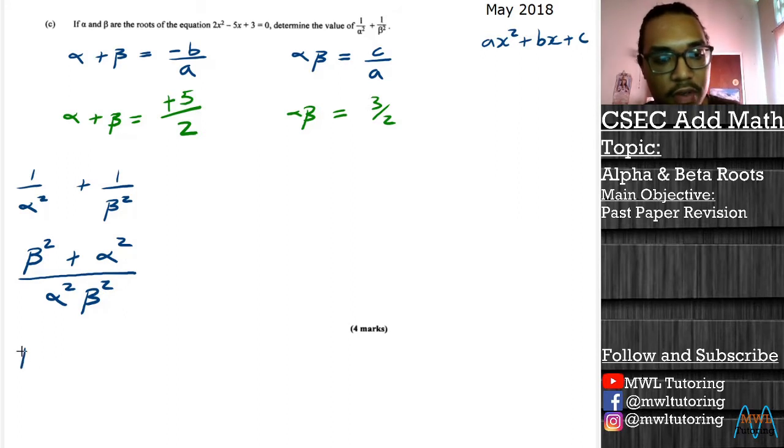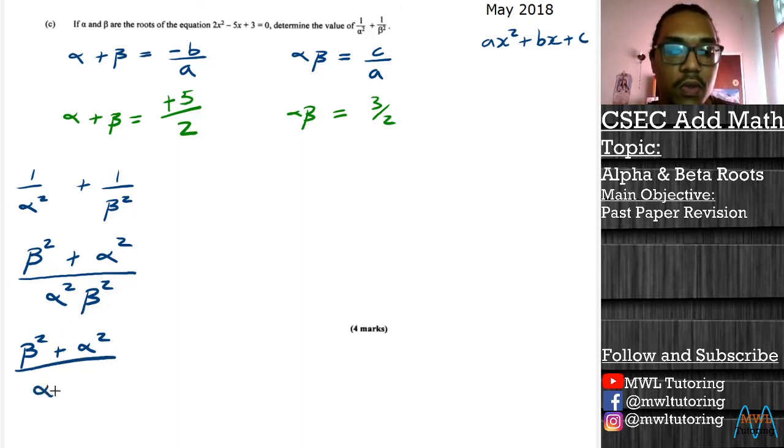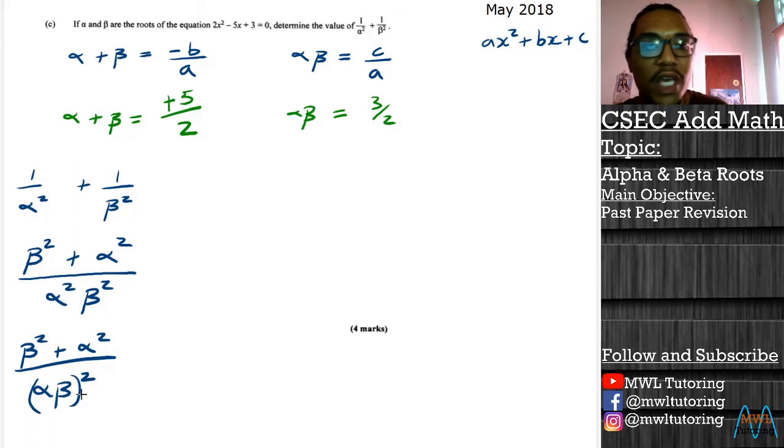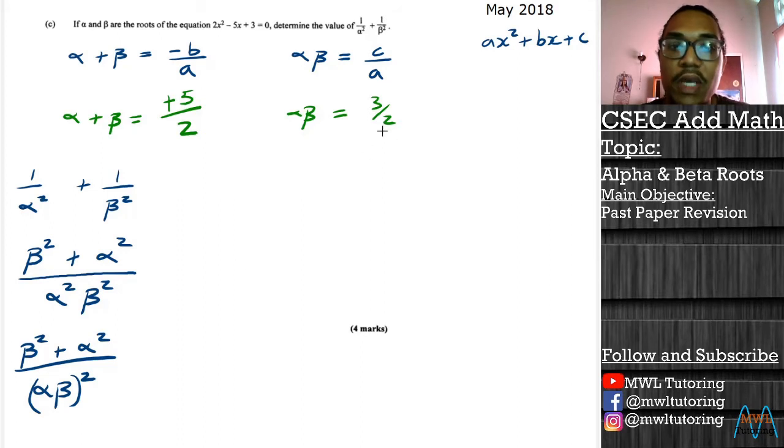So now we have beta squared plus alpha squared over, and because these two have the same powers we could just move that power to the outside here. And now we kind of made some good progress because the alpha by beta in the brackets we have 3 over 2, so the 3 over 2 could go into here and we just square it later on. What we have to figure out is what we're going to do with the numerator, because beta squared plus alpha squared is not the same thing as just squaring this.